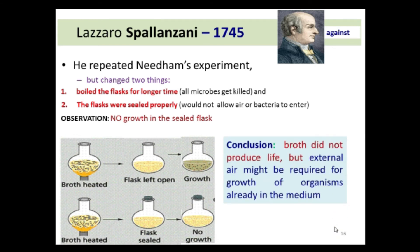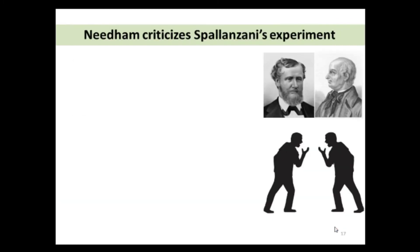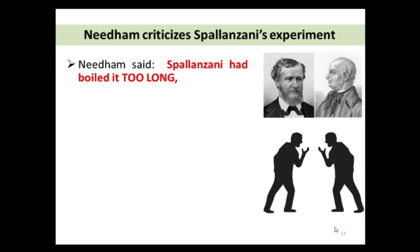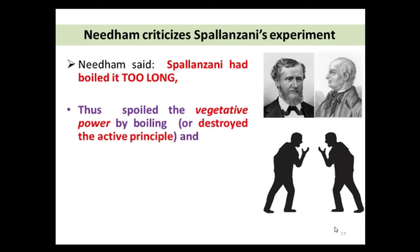In his experiment, Spallanzani observed no growth in the sealed flask. He concluded that broth did not produce life, but external air might be required for growth of organisms already in the medium. All he proved was that spontaneous generation could not occur without air. However, Needham and other believers of spontaneous generation criticized his experiment, saying Spallanzani had boiled the broth too long, thus destroying the active principle and killing the broth's ability to give life.